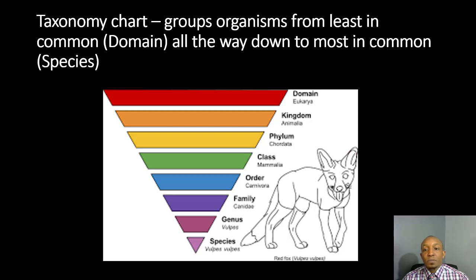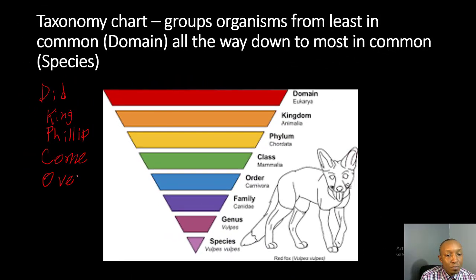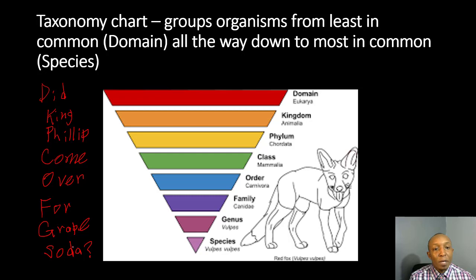Right here we have a taxonomy chart which groups organisms from least in common — which is our domain at the top — all the way down to the most in common, which is species. So we start off with domain, then move down to kingdom, phylum, class, order, family, genus, and species. One way we can remember this is to ask the question: Did King Philip Come Over For Grape Soda? The initials D-K-P-C-O-F-G-S give us a great mnemonic to help us remember all the way from domain down to species.